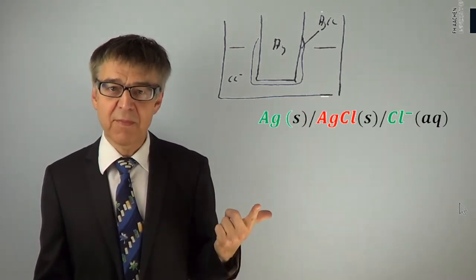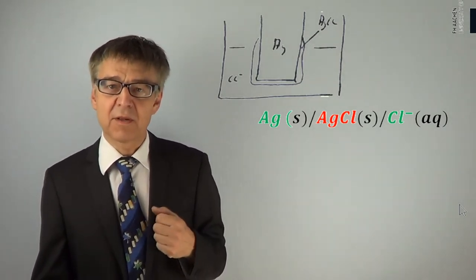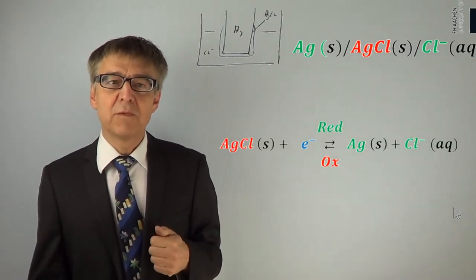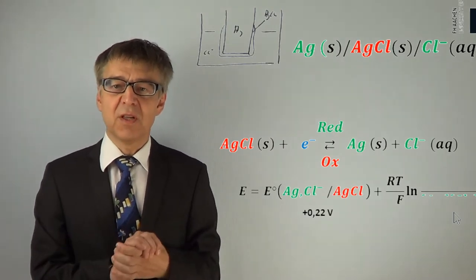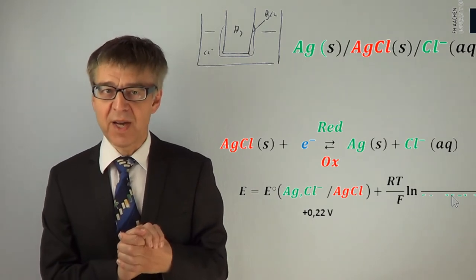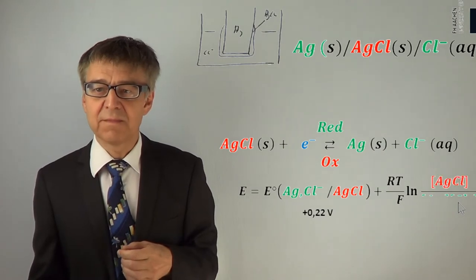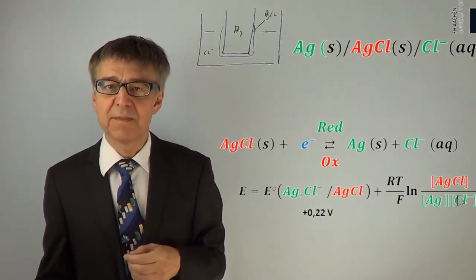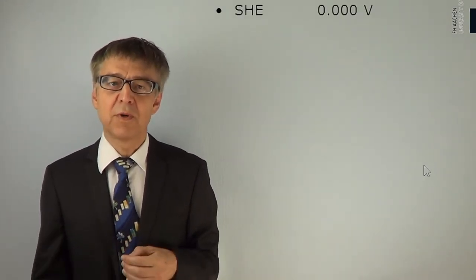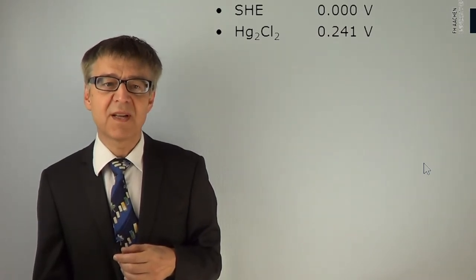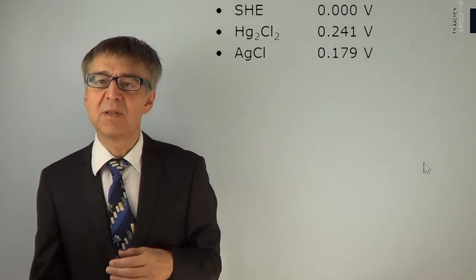A very common type of reference electrode is the silver–silver chloride electrode. This is a three-phase system combining a metal, a sparingly soluble salt of that metal, and an electrolyte with the corresponding anion. The Nernst equation for this electrode uses 0.22 V for E₀ and ν_E = 1. The argument of the logarithm divides the mole fraction of solid silver chloride by the mole fraction of solid silver and the molar concentration of chloride ions in moles per liter. Classical reference electrodes include the standard hydrogen electrode (SHE) at 0.000 V (pH 0), the calomel electrode at 0.241 V, and the saturated silver–silver chloride electrode at 0.179 V.